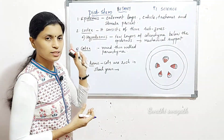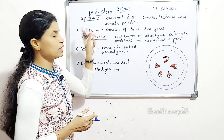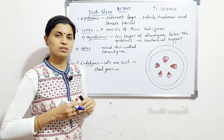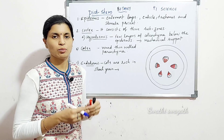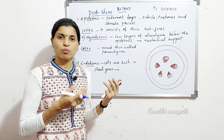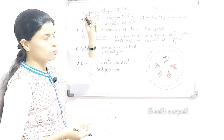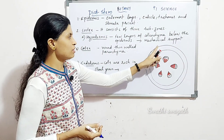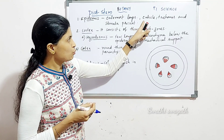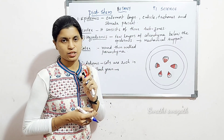First one is epidermis. This is the outermost layer, made up of a single layer of cells. It provides protection, so it is the outermost protective layer. The speciality here is that cuticle, trichomes, and stomata are present.